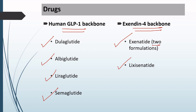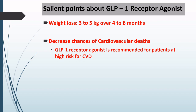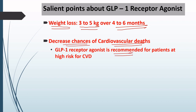Exenatide has two formulations. Two very important points about GLP-1 receptor agonists: first, all GLP-1 receptor agonists cause weight loss — in clinical trials, patients lose 3 to 5 kg of body weight over 4 to 6 months. Second, GLP-1 receptor agonists decrease the chances of cardiovascular deaths. Hence, GLP-1 receptor agonists are recommended for patients who have diabetes mellitus and are at high risk of developing cardiovascular diseases.